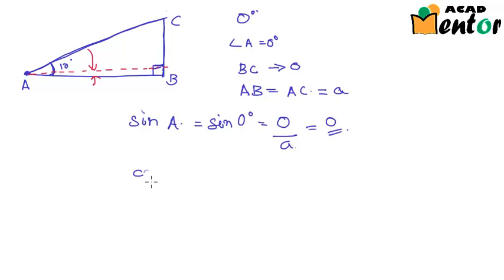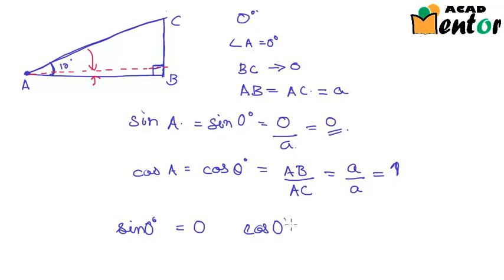And similarly, cos of A would be cos of 0 degrees. This would be the adjacent side for angle A which is AB in this case. So AB and AB was equal to A. And upon the hypotenuse which was AC. So even this was A and AC was also A. So we would have cos of 0 degrees as 1. So we define sine 0 degrees as 0 and cos of 0 degrees as 1.